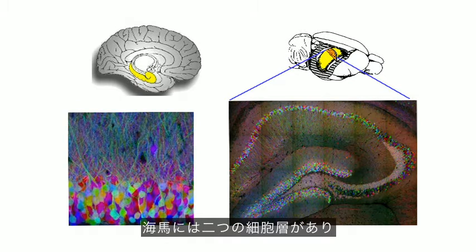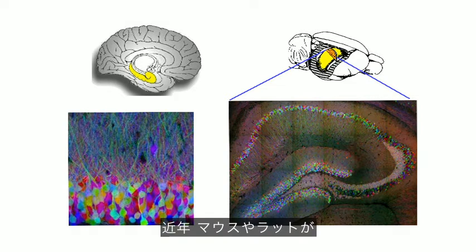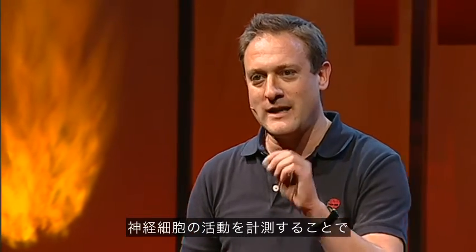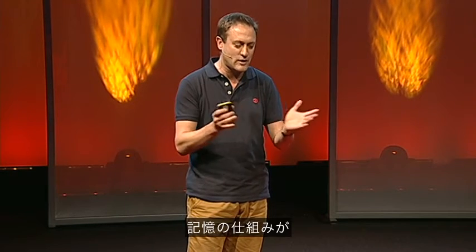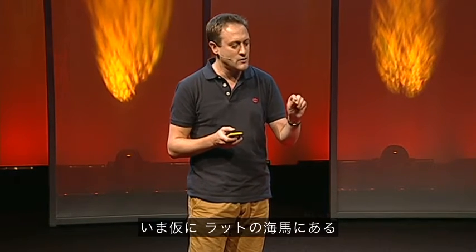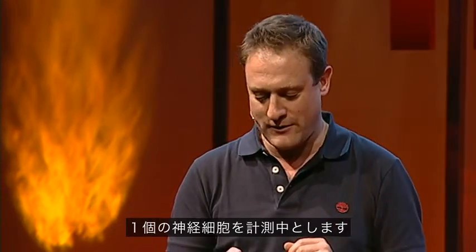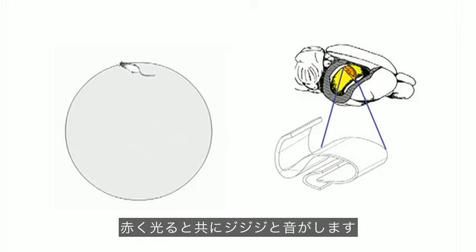The hippocampus is formed of two sheets of cells which are very densely interconnected. Scientists have begun to understand how spatial memory works by recording from individual neurons in rats or mice while they forage or explore an environment looking for food. So we're going to imagine we're recording from a single neuron in the hippocampus of this rat here. And when it fires a little spike of electricity, there's going to be a red dot and a click.